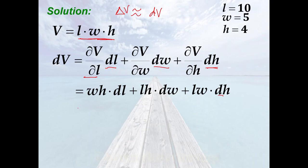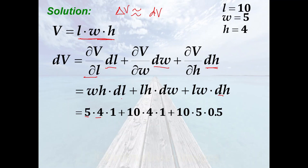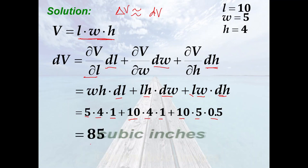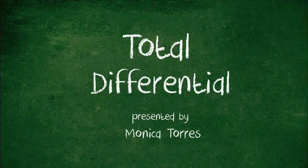Substituting the values: dV equals 5 times 4 times dL (which is 1), plus 10 times 4 times dW (which is 1), plus 10 times 5 times dH (which is 0.5). This equals 20 plus 40 plus 25, which equals 85. Thus, the volume of the material is approximately 85 cubic inches. And that is the end of our discussion for total differential.